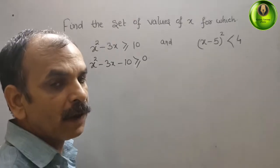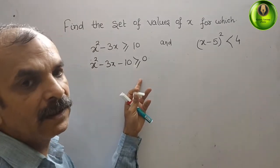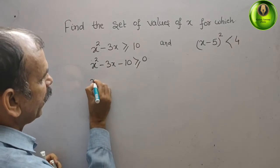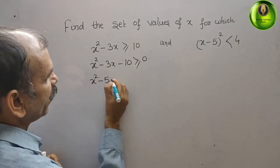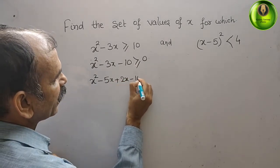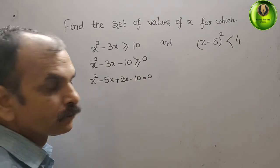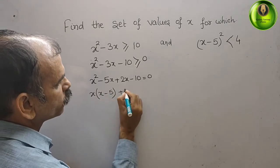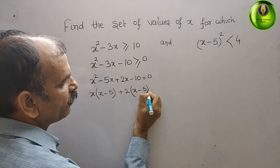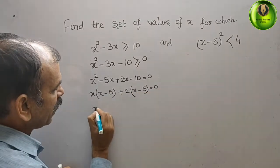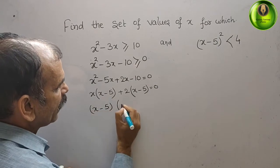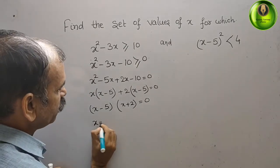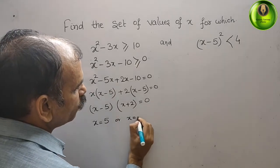We solve by middle term splitting, treating it as equal to zero first. So x squared minus 5x plus 2x minus 10 equals 0. Here x is common, giving x(x minus 5), and 2 is common, giving plus 2(x minus 5) equals 0. The two factors are (x minus 5)(x plus 2) equals 0, so x equals 5 or x equals minus 2.